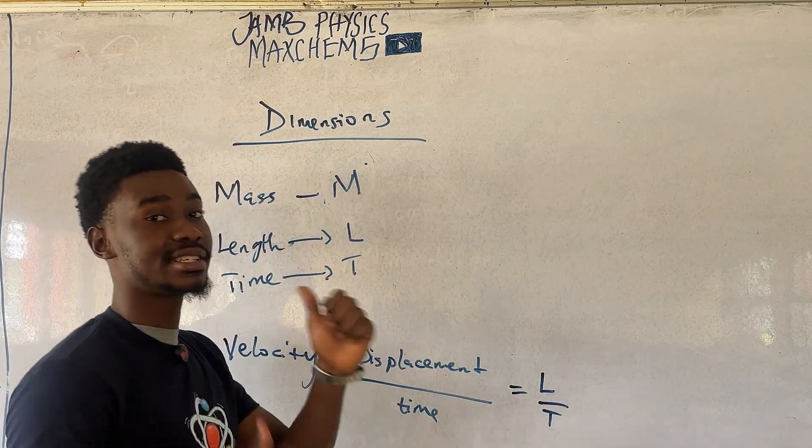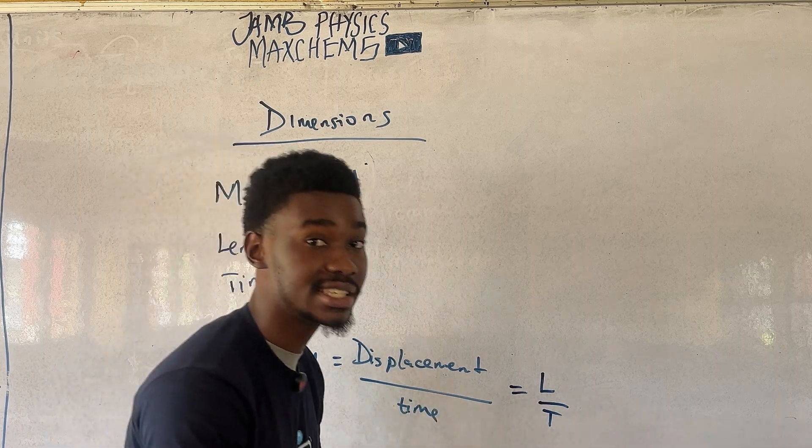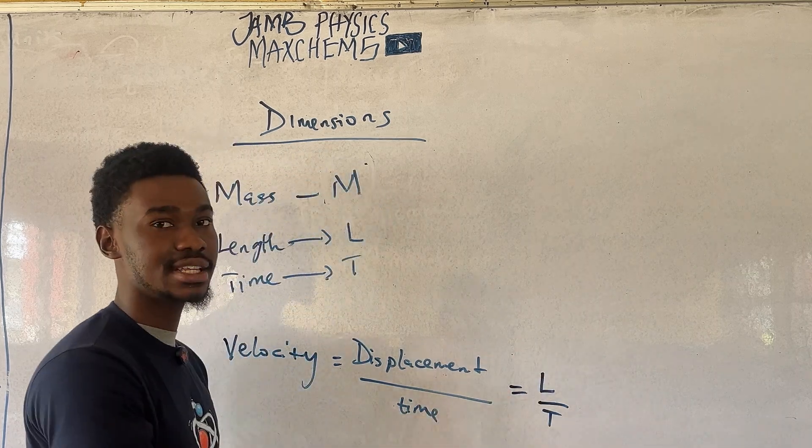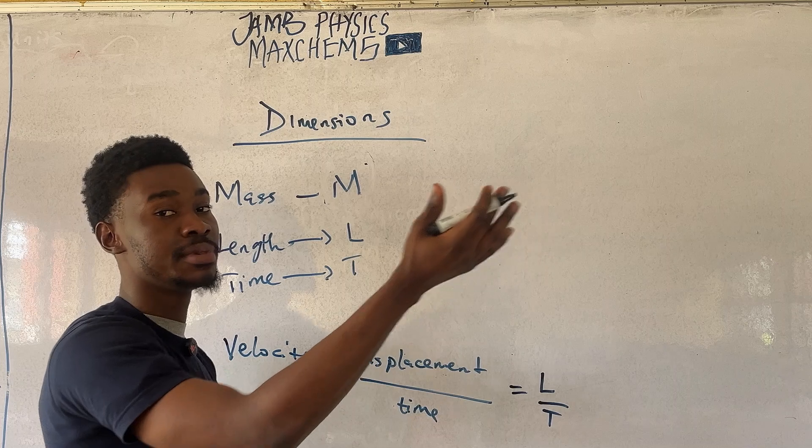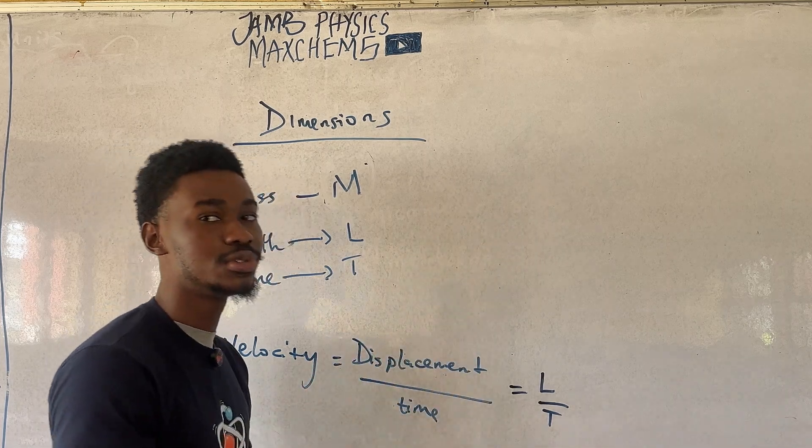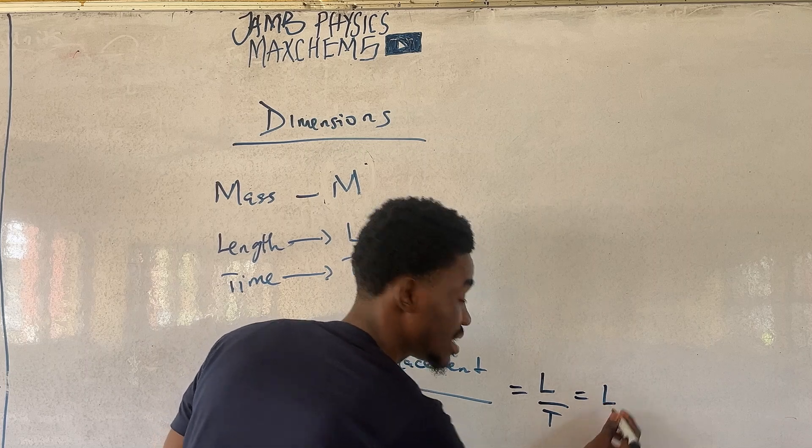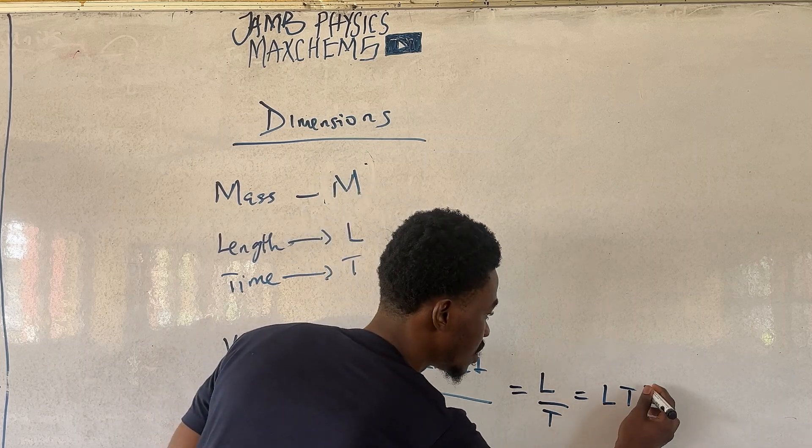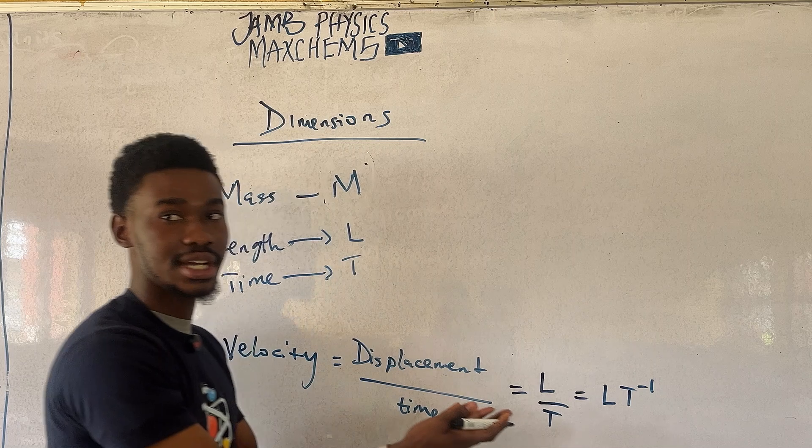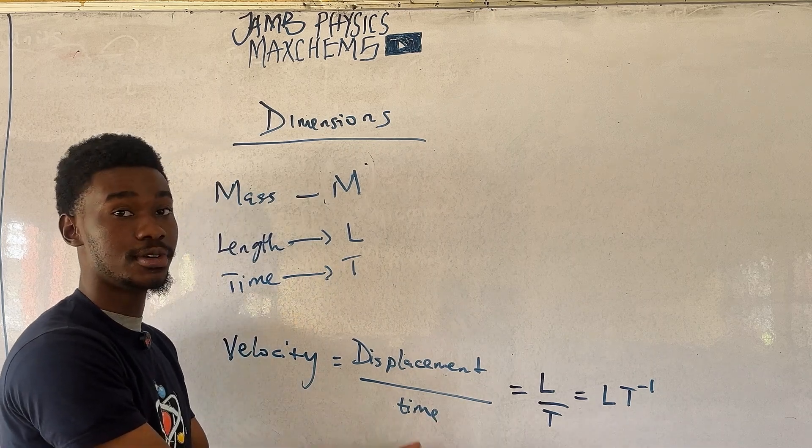And now, I have to take you back to mathematics. If you can remember the laws of indices, when you have a fraction like this and you want to take the denominator up, you have to include a power of minus one. So, this can be written as LT to the power of minus one. And that is how you write the dimension for velocity.